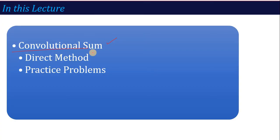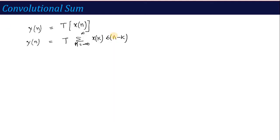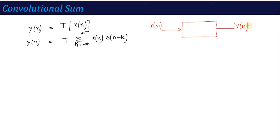In the same way, here we are going to talk about convolution sum using the direct method, and with a problem we are going to understand this method. So let's start our lecture on convolution sum. Taking the formula here — if we consider a system where the input is discrete time signal X(n) and our output is Y(n), then Y(n) is related to X(n) and is equal to a function of X(n).